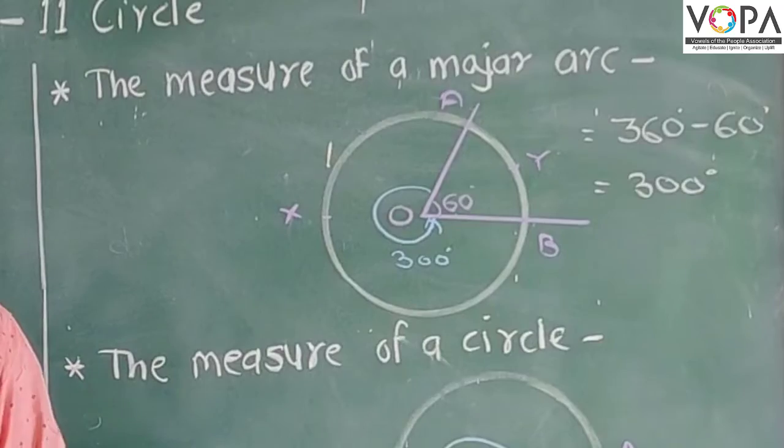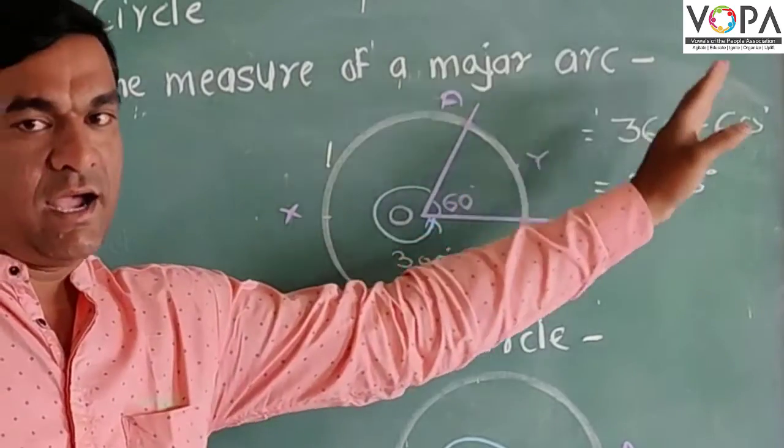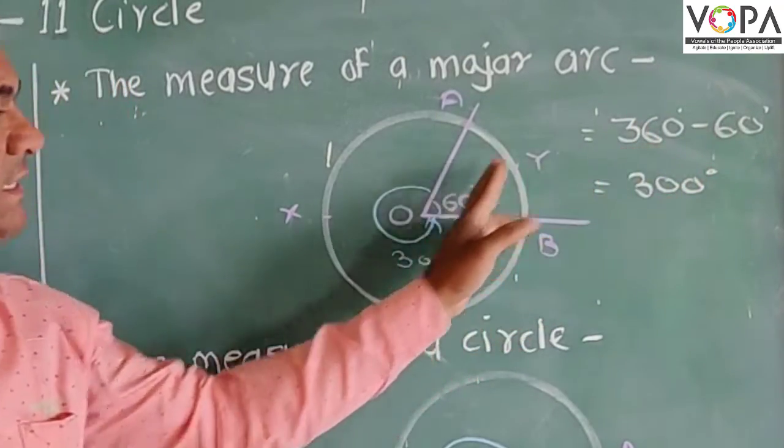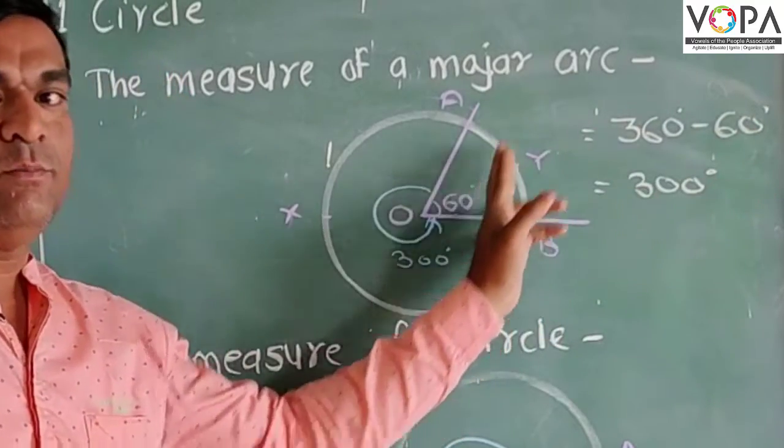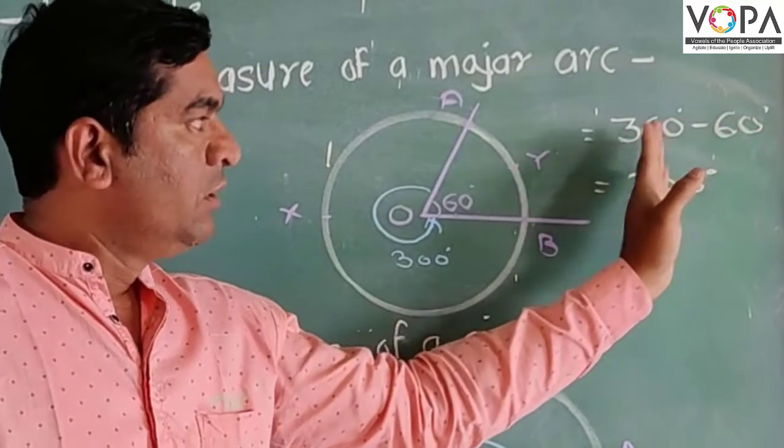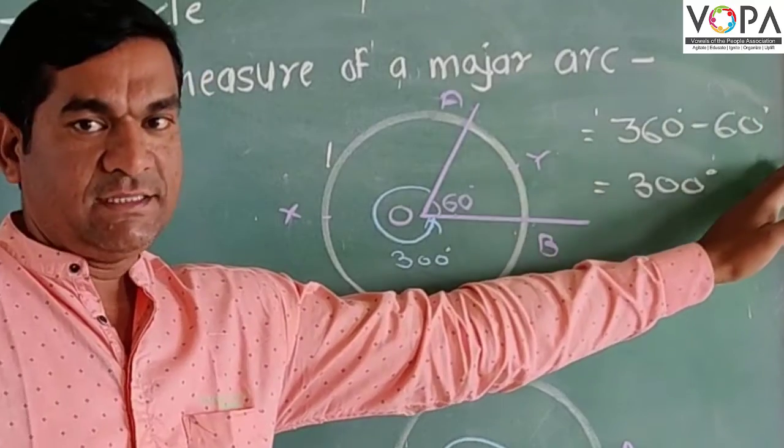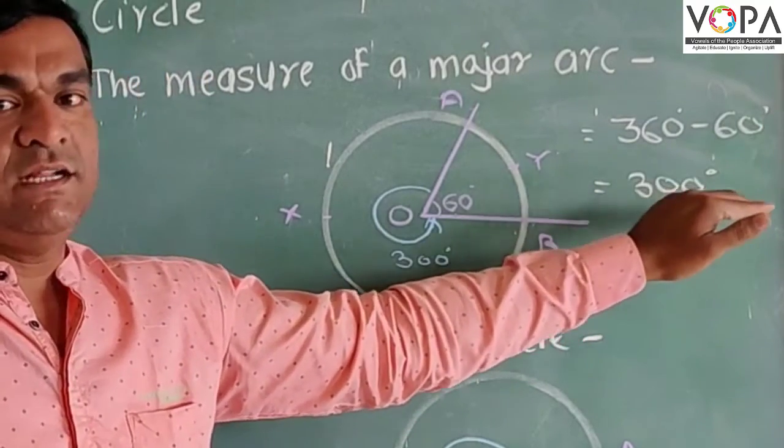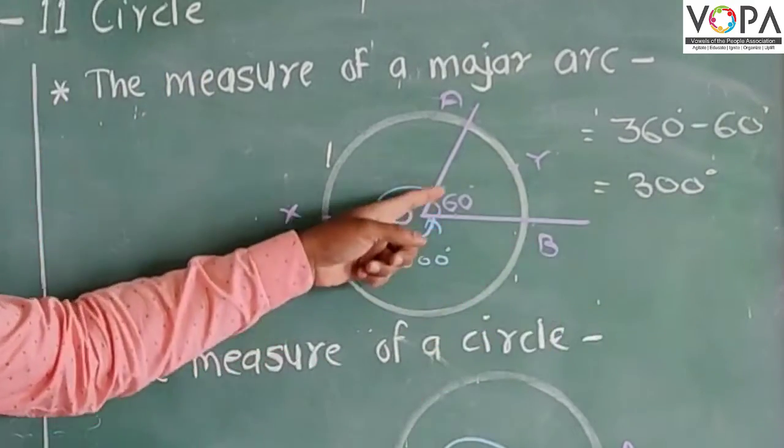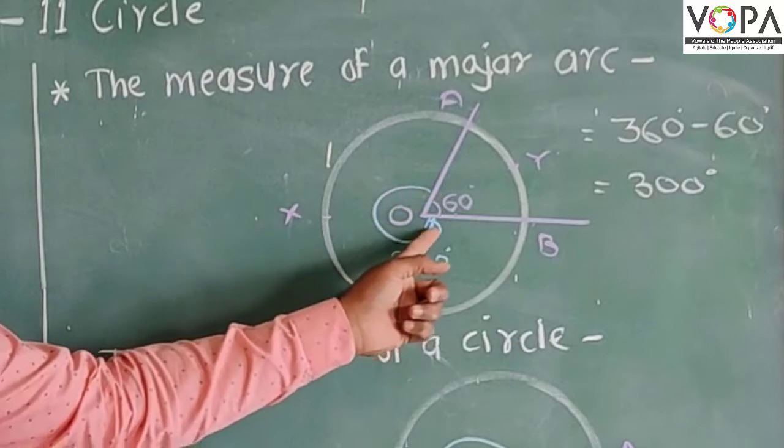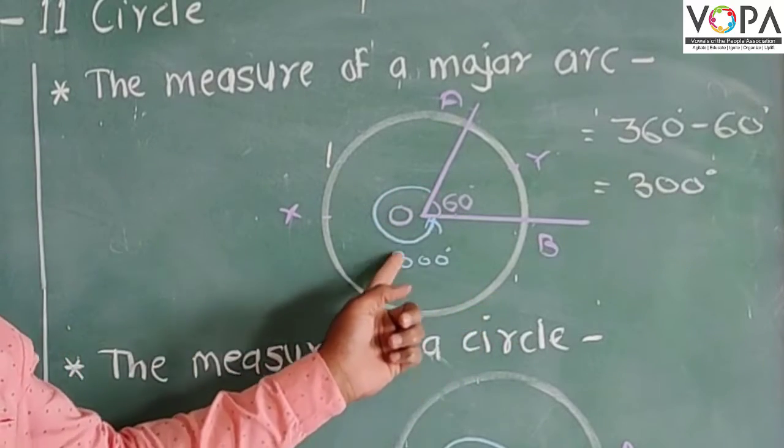First, total value of this central angle or circle is 360 degrees. And after that 360 degrees, we want to subtract the minor arc. Means 360 minus 60 degrees is equal to 300 degrees. That's why, see the measure of the minor arc is given as 300 degrees.